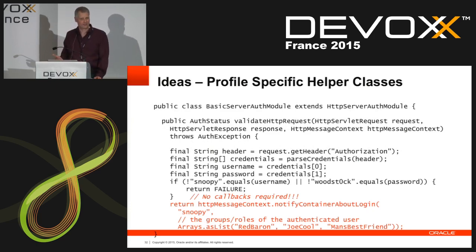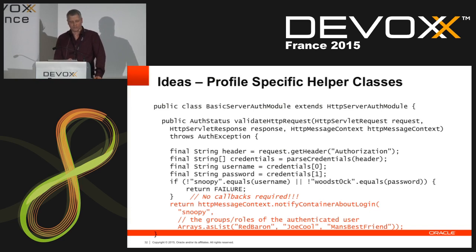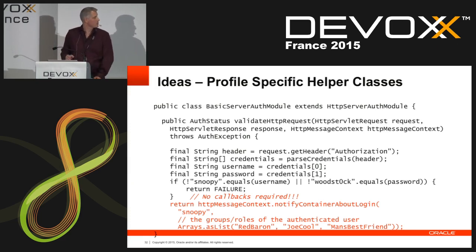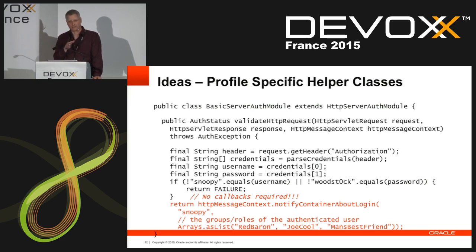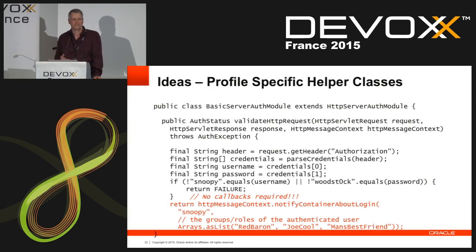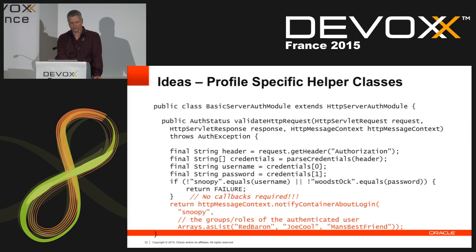Even with just one method, there's still a lot of code. In this basic auth server auth module example, that one method grabs the authorization header, parses the credentials, checks the user and password. There are no callbacks required in this simplified version. If you were to write a server auth module in JASPIC normally, you'd have five or ten lines of code creating callbacks, populating callbacks, calling the handler. So rather than those lines, we simplify it to just one method called 'notify container about login', where you pass in the user and groups. Less code, easier, more attainable and usable by developers.